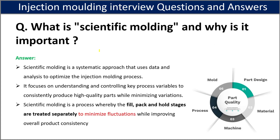The next question is: what is scientific molding and why is it important? Scientific molding is a process where the fill, pack, and hold stages are treated separately in order to minimize fluctuations while improving overall product consistency.